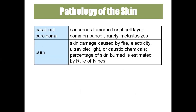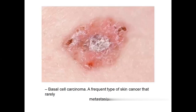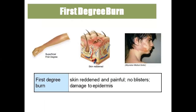Basal cell carcinoma is cancer to the basal cell layer, which rarely spreads to other areas. Burns are any skin damage caused by fire, electricity, ultraviolet radiation, or caustic chemicals. We calculate the percentage of burns using the rule of nines. Basal cell carcinoma is skin cancer but rarely spreads. Burns are classified into three types: first degree, second degree, and third degree.